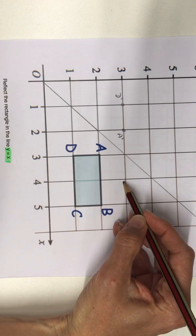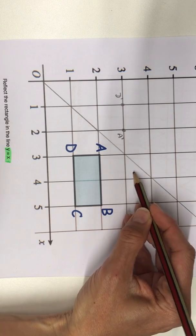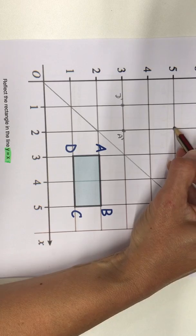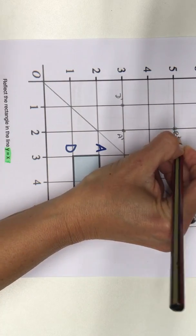The B is 1 and 1 half diagonals away. So on the other side, a half and one. That's B' dash.